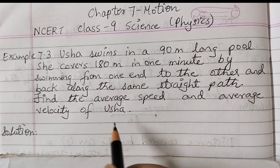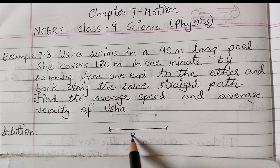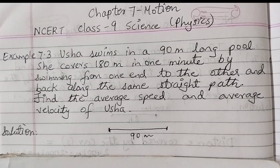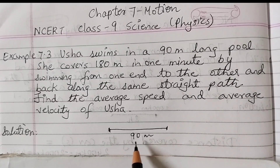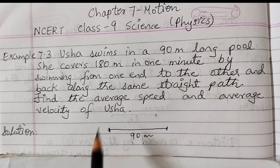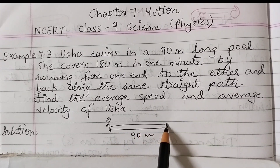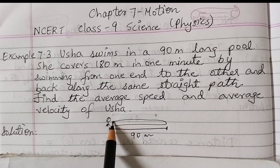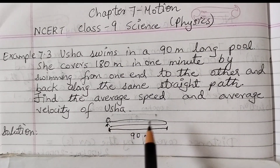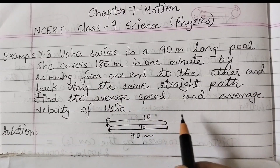Usha is swimming in a swimming pool of length 90 meters. Suppose Usha is standing at one end and she goes from this end to the other end — that is 90 meters — and comes back again to the same position. So this is 90 meters going, and 90 meters returning, giving a total of 180 meters.